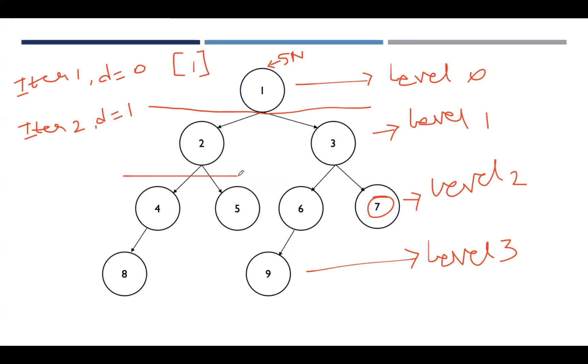Here, traversing takes place till level 1, and the nodes which are visited are obviously: node 1 is already visited, now 2 and 3.